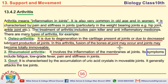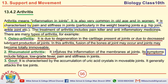Define rheumatoid arthritis and write its symptoms: rheumatoid arthritis involves the inflammation of membranes at joints. The symptoms of rheumatoid arthritis include fatigue, low-grade fever, pain and stiffness in joints. These are the basic symptoms of rheumatoid arthritis.